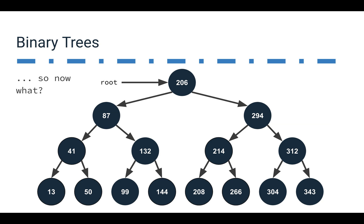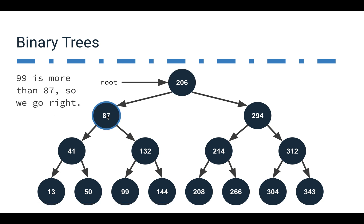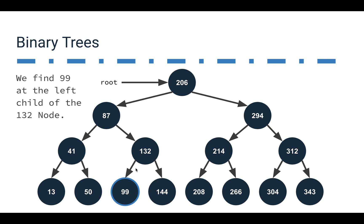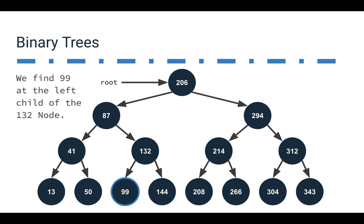So now what? Let's say we want to find the value 99. A computer can't just find it visually — it has to use the structure. We start at 206; 99 is less than that, so we go left. We compare to 87 — it's more than that, so we go right. Then it's less than 132, so we go left, and here we find it. We've navigated the tree, starting at the root and moving downward, and we end up at that node.